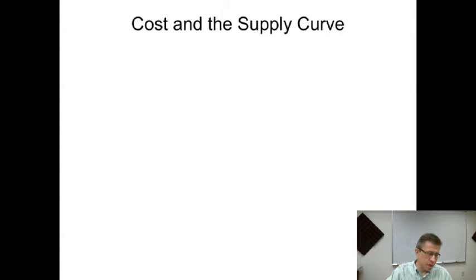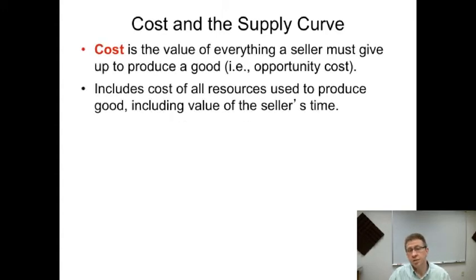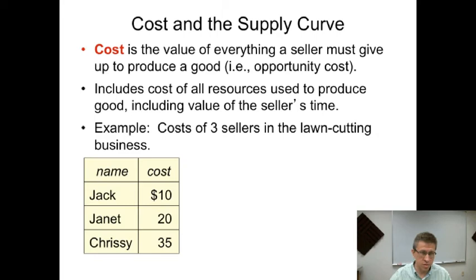So how do we think about modeling producer surplus? Well, cost is the value of everything a seller must give up to produce a good—opportunity cost. You could think about this as actual things you have to expend money on, but also your time. Right, and if you're going to take a job, if you're giving up your time, it may not cost you anything to give up your time except there's an opportunity cost that's very real. Right, there's other things you could do with your time other than working.